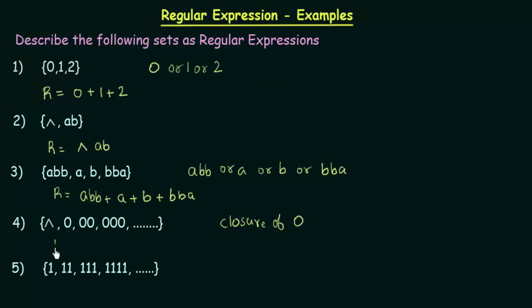How do we denote closure? This can be denoted by R = 0*. When you give a star mark or asterisk mark as a superscript, it denotes the closure of that symbol. So this is 0* — the Kleene closure of 0.